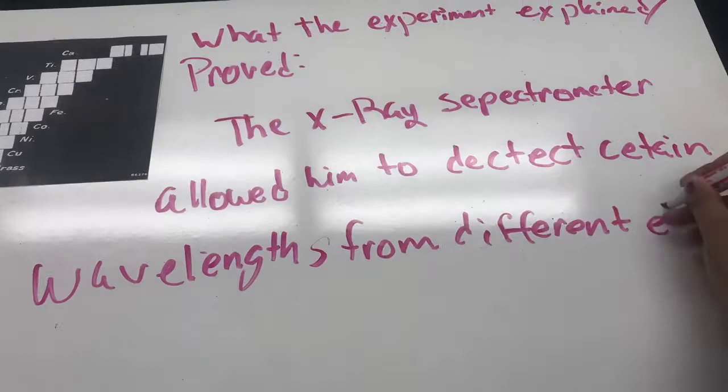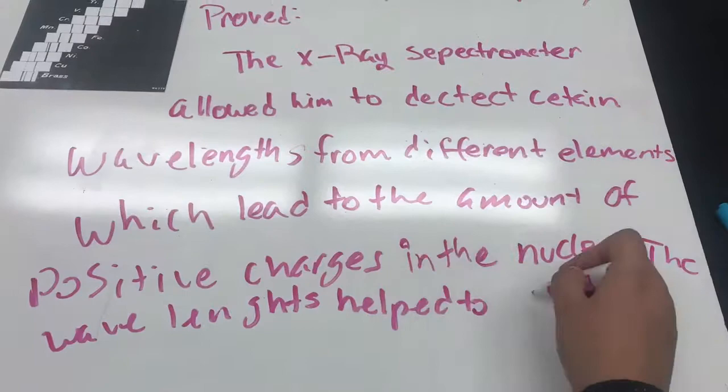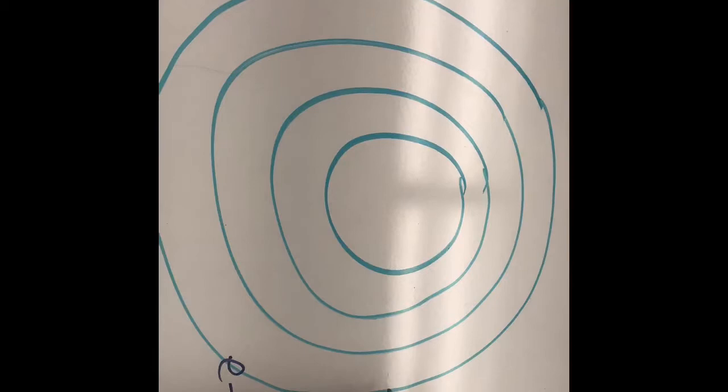The X-ray spectrometer allowed him to detect certain wavelengths from different elements, which led to determining the amount of positive charges in the nucleus. The wavelengths helped to define the element's order given its atomic number. Moseley had great contributions to understanding atomic structure.